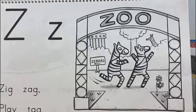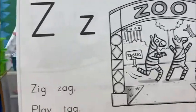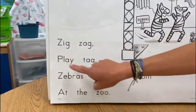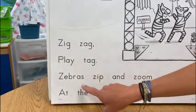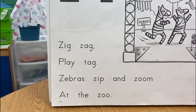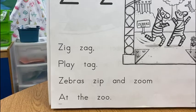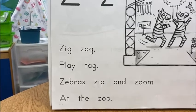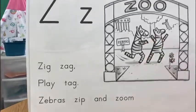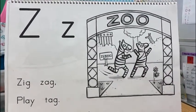Let's read our story for the Z letter. Zig, zag, play, tag. Zebras zip and zoom at the zoo. I can see that they're playing tag, so they must be zipping and zagging, zooming around the zoo. Looks like they're having fun.